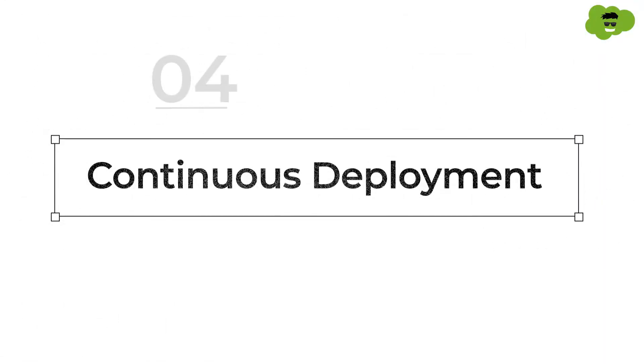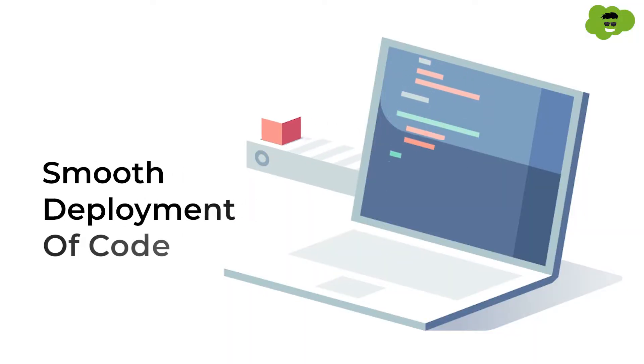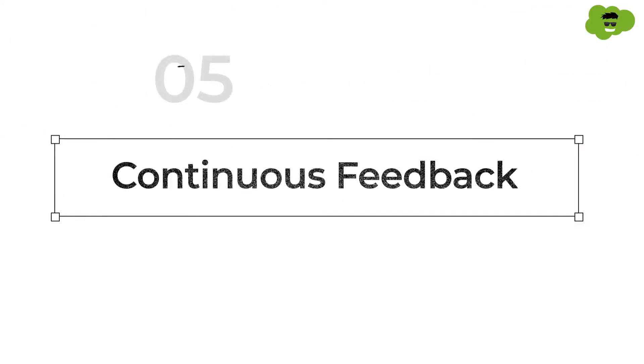The fourth C is continuous deployment, which involves the configuration management process to ensure the smooth deployment of code on the servers. During the development phase, the development department delivers the code to the servers and schedules upgrades while maintaining consistent configurations.